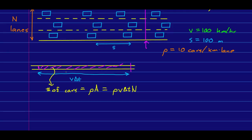And so, now our car current, which I'll call I sub c, is just the number of cars per unit time. And so, all we're doing is dividing out the delta t, and it's rho v n.